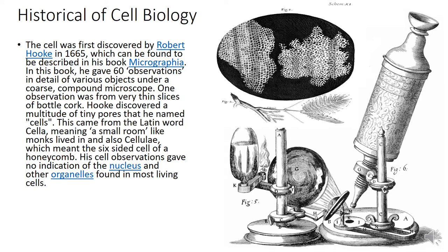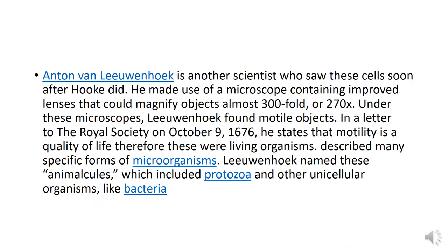He examined plant leaves under the microscope and saw that they resembled honeycomb cells. However, his cell observations gave no indication of the nucleus and other organelles found in most living cells. Antoine Leeuwenhoek is another scientist who saw these cells soon after Hooke.